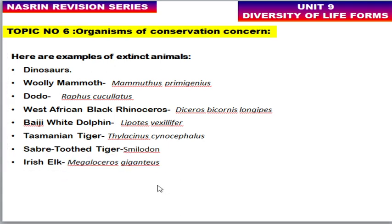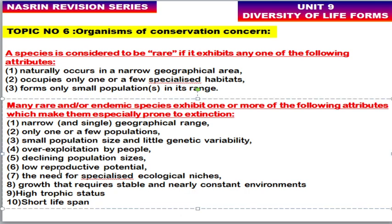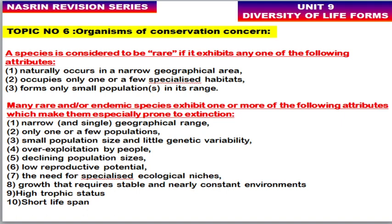A species is considered rare if it occurs naturally in a narrow geographical area, occupies only one or few specialized habitats, or forms only small populations. Rare and endemic species are especially prone to extinction due to: narrow geographic range, small population size, low genetic variability, overexploitation by humans, declining population, low reproductive potential, need for specialized ecological niche, requirement for stable and constant environment, high trophic status, and short lifespan.